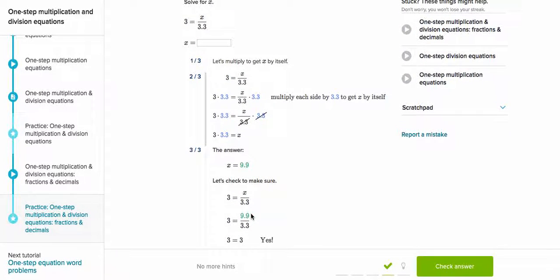How do we know that? Well, we multiplied 3.3 multiplied by 3, excuse me, and we got 9.9.